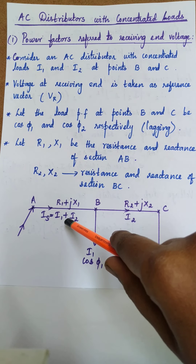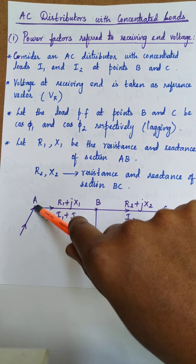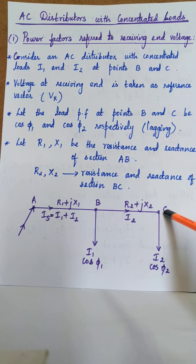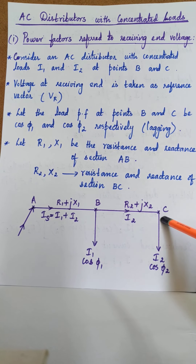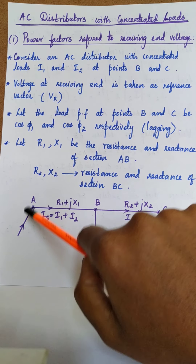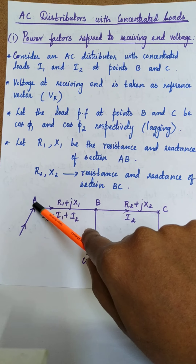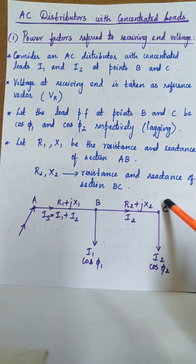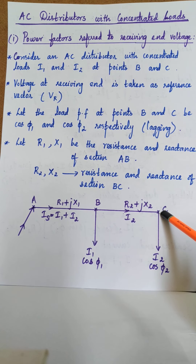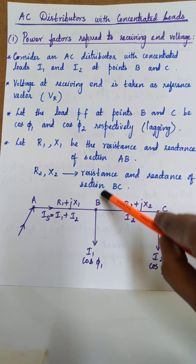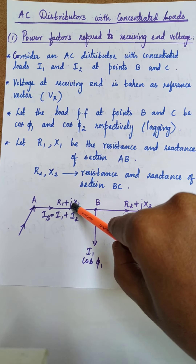The sending end current is IS, and the sending end voltage is V at point A. The receiving end voltage is V at point C, and the receiving end current is I2. Our aim is to calculate the voltage at the sending end. The sending end voltage will be the receiving end voltage at point C plus the voltage drop across section BC plus the voltage drop across section AB.